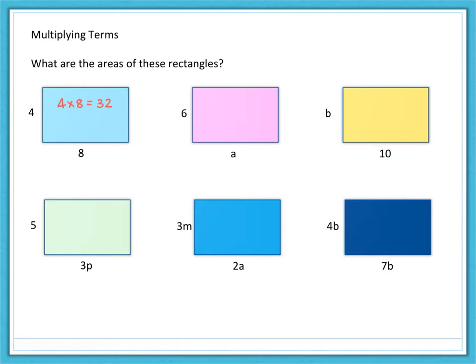So what about in the second rectangle, the pink one? Well, we have to do 6 multiplied by a, which we can write as 6a. Now, that is the same as a multiplied by 6. Again, we write the number first because we think of it as 6 lots of a.